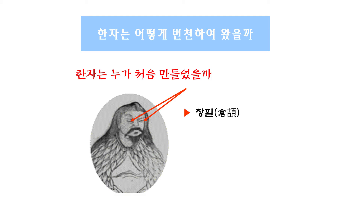창힐이라는 사람의 특징은 눈 밑에 눈이 하나 더 있어서 눈이 4개죠. 왜 눈을 4개로 만들었느냐 하면, 춘추전국시대 때 많은 제자들이 창힐에 대해 언급합니다. 누가 만들었냐고 하면 모른다고 할 수 없잖아요. 그래서 창힐이 점점 신격화됩니다. 처음에는 고대의 한 사람, 나중에는 고대의 사관, 그다음에는 황제를 모시던 사람, 나중에는 황제야까지 발전합니다.